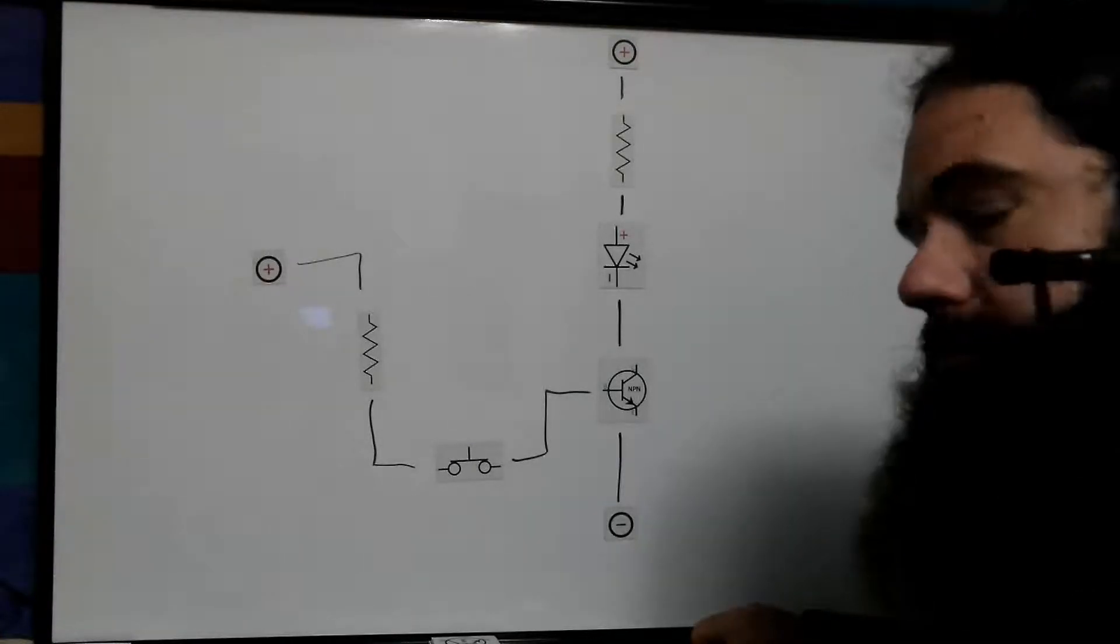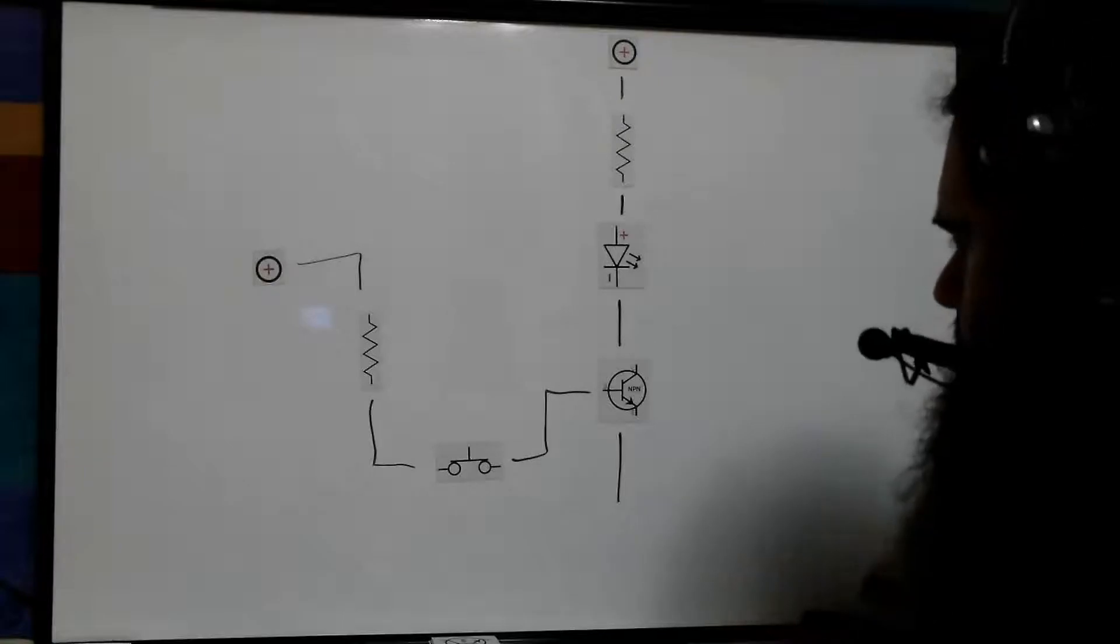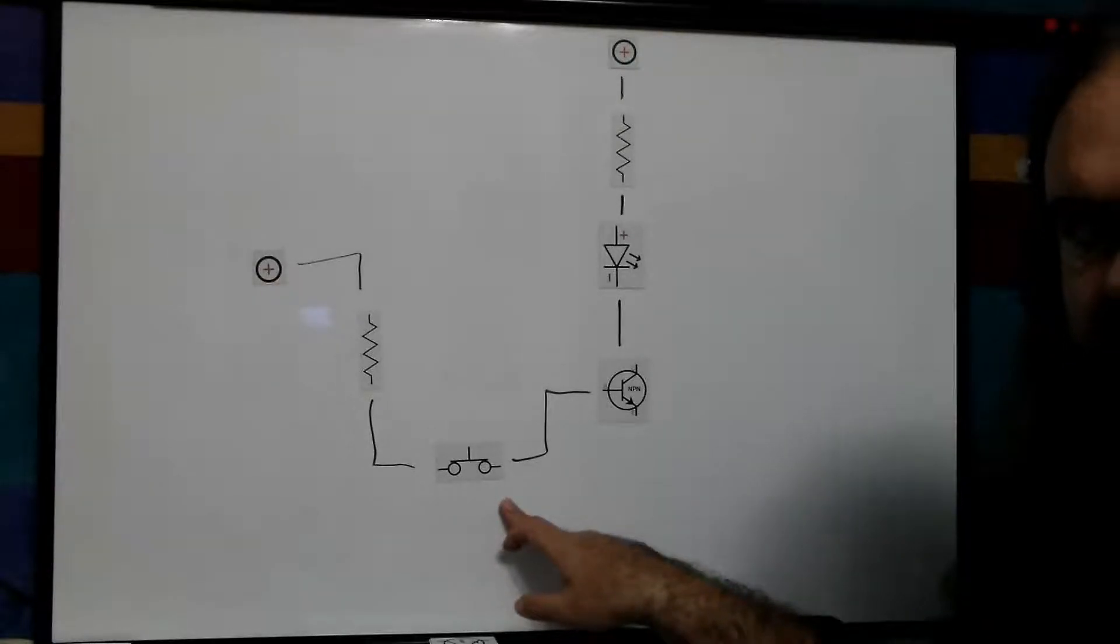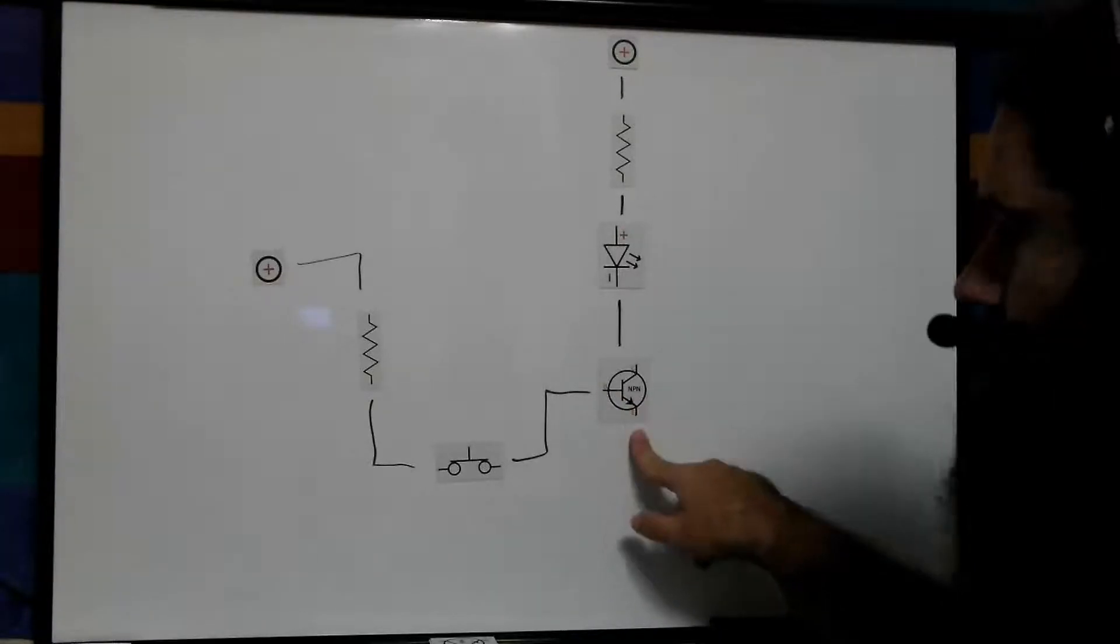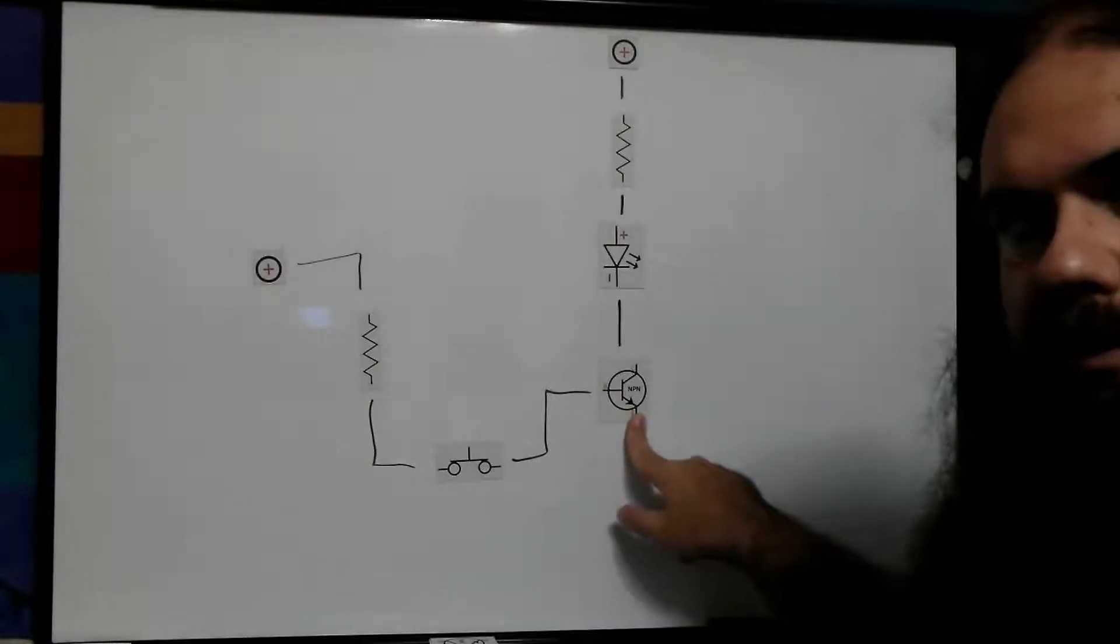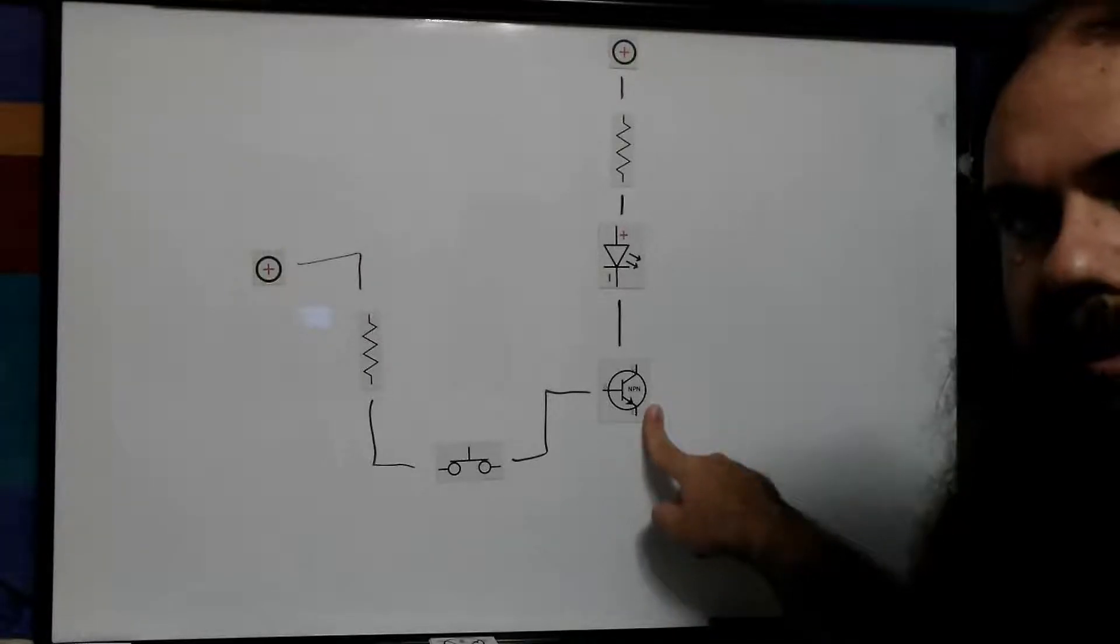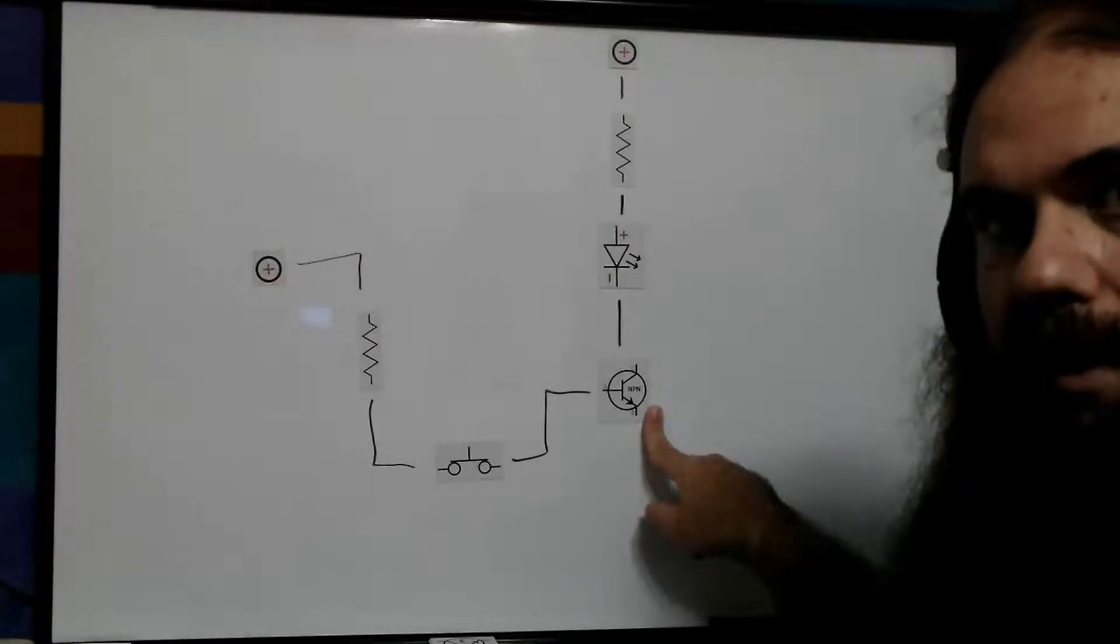So how do we fix this? Well, we daisy-chain the transistors. Remember how a transistor magnifies current in its normal usage here? The current through base to emitter is the current through the collector to emitter, but it's multiplied by a beta factor that's determined by the transistor.